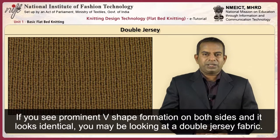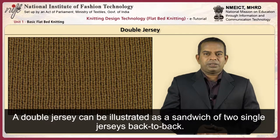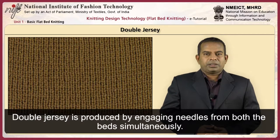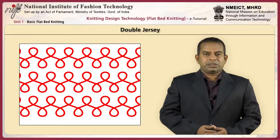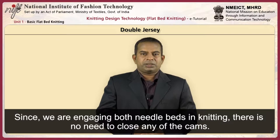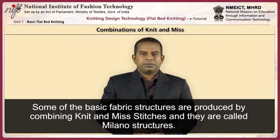If you see a prominent V-shape formation on both sides and it looks identical, you may be looking at a double jersey fabric. A double jersey can be illustrated as a sandwich of two single jerseys back to back. Double jersey is produced by engaging needles from both beds simultaneously. Since both needle beds are engaged in knitting, there is no need to close any of the cams.